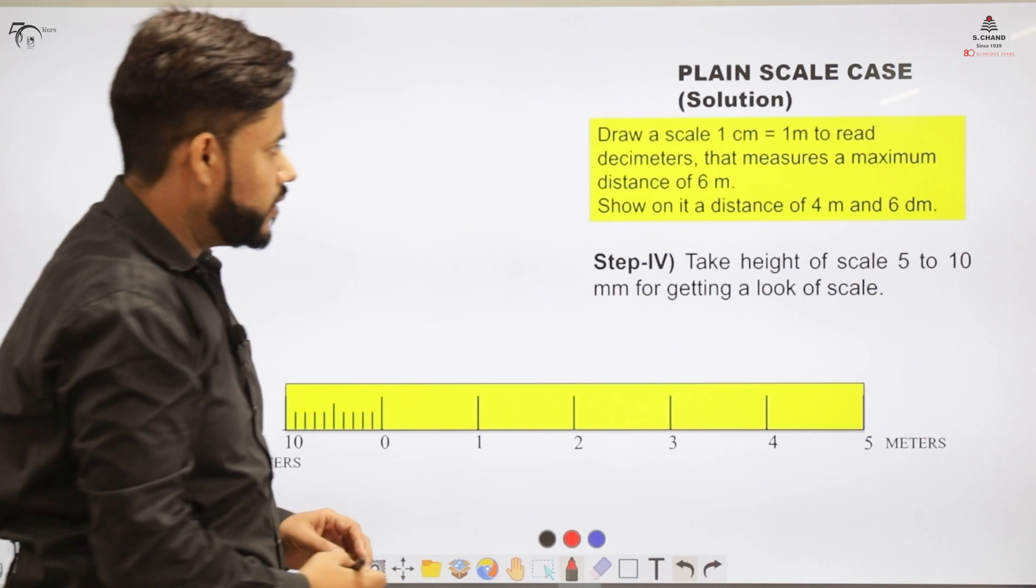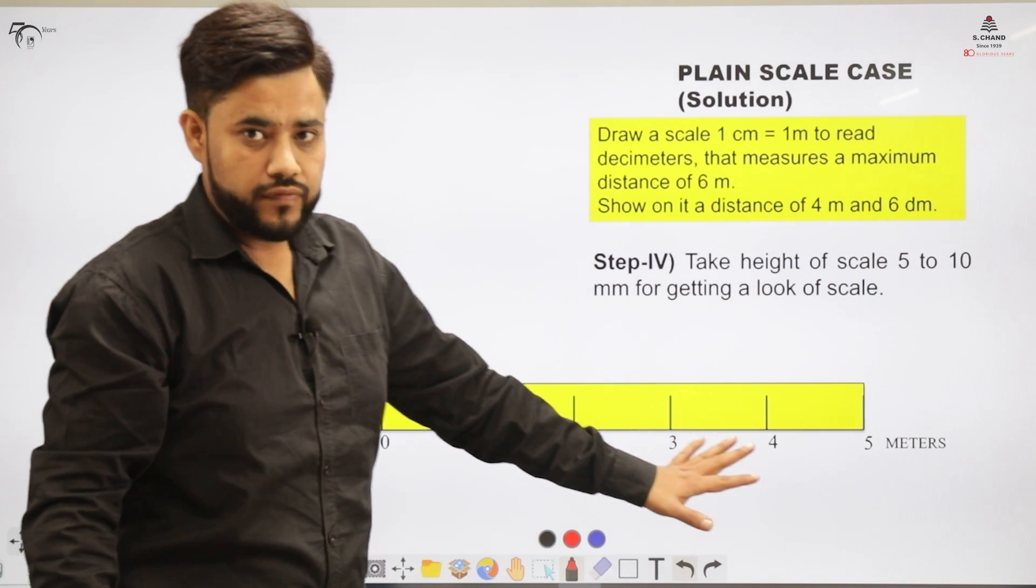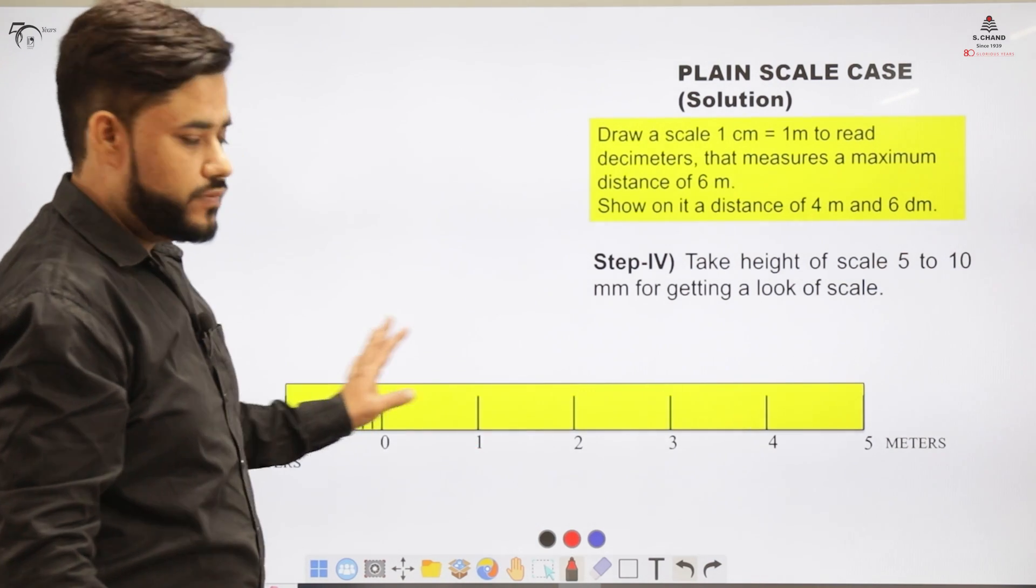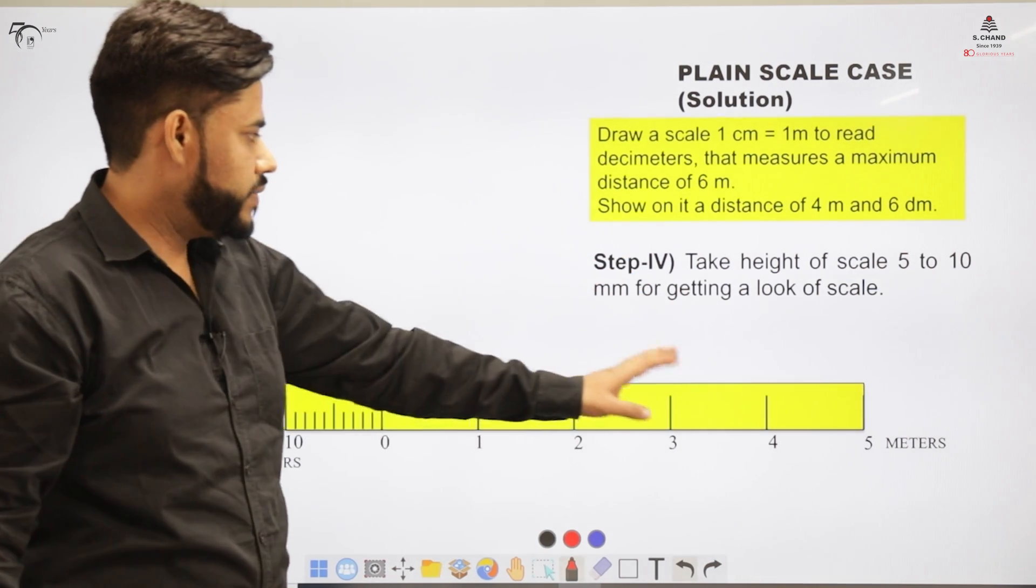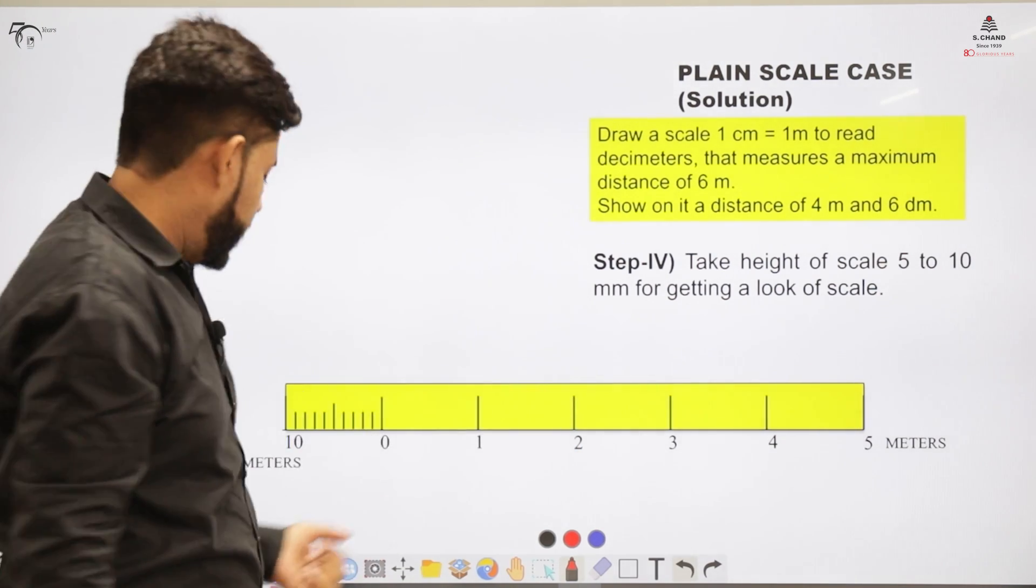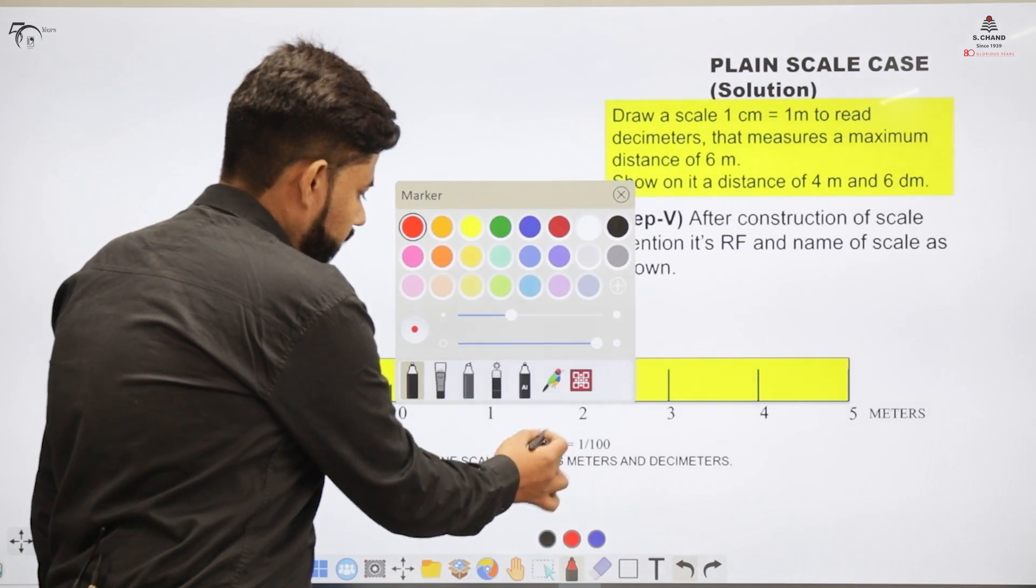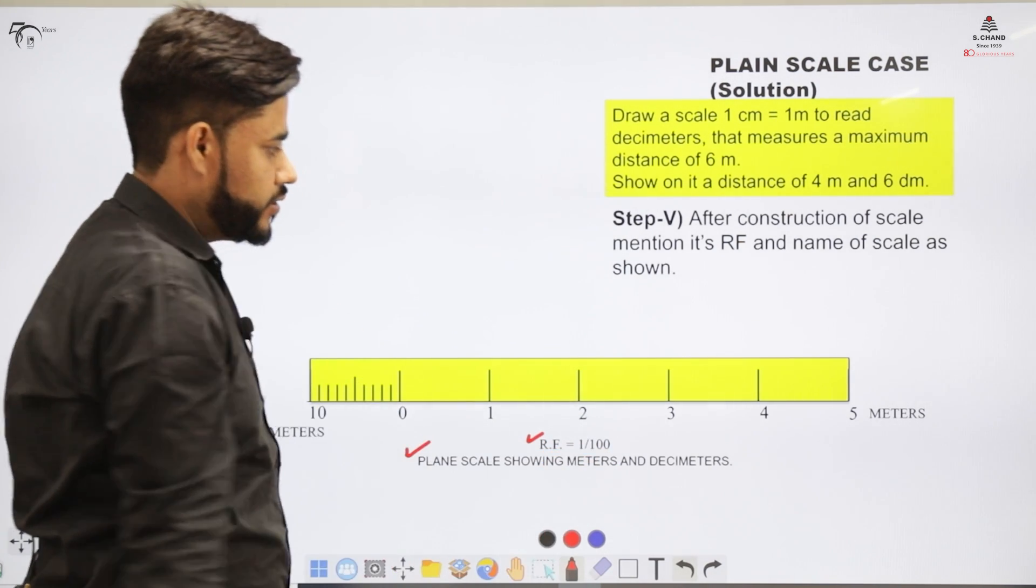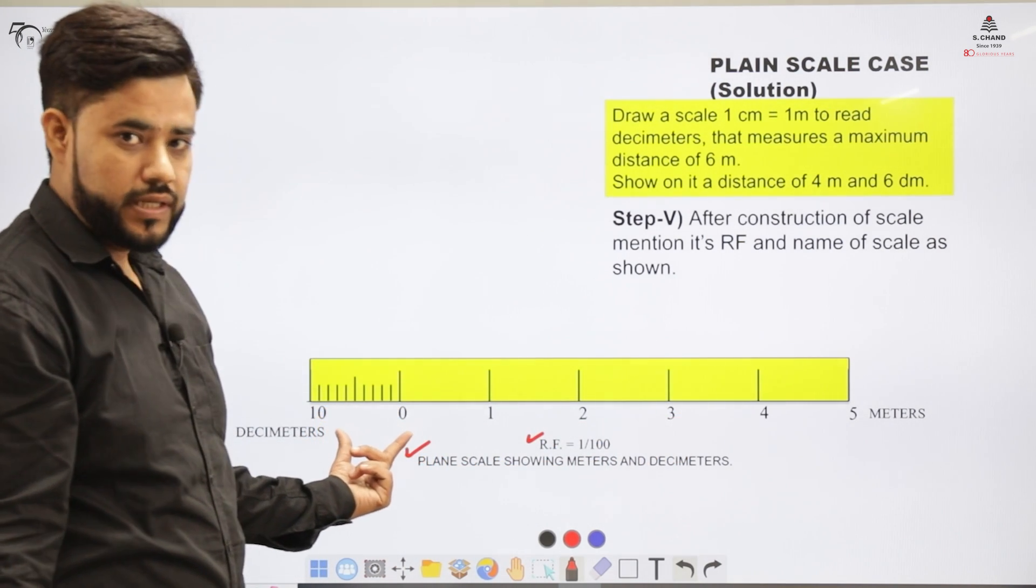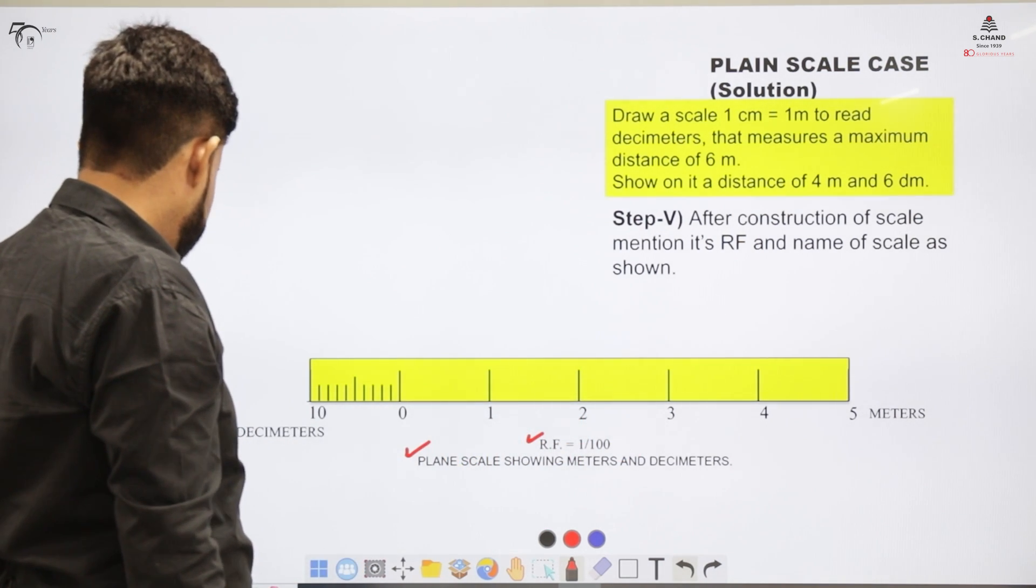Now coming to the next part, when I divided this into 10 equal divisions in order to give it a look of a scale I have drawn a rectangle around it and the measurement of the height of that rectangle is around 5 to 10 mm. So 5 to 10 mm is the height of the scale. The next step is to indicate that RF value and the plane where that shows meter and decimeters within the scale. So meter is represented here, the decimeter scale is represented here and ultimately the overall RF value and the plane scale is represented.